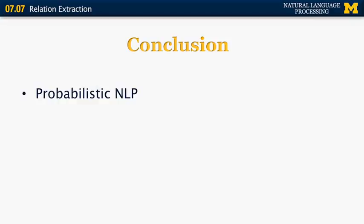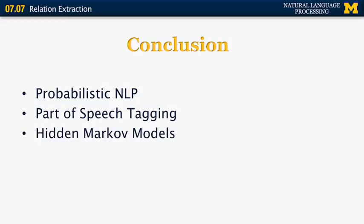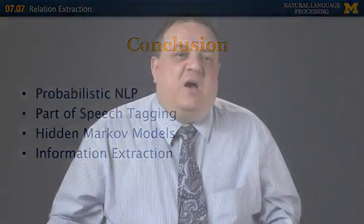To conclude, probabilistic NLP is very important. One of the most crucial examples of probabilistic NLP in action is part of speech tagging using hidden Markov models. And information extraction also uses the same kind of techniques for probabilistic natural language processing. There's one more technique that is used in information extraction called conditional random fields, which we did not cover. And you can look it up in the textbook. This concludes the section on information extraction. Thank you for your attention.